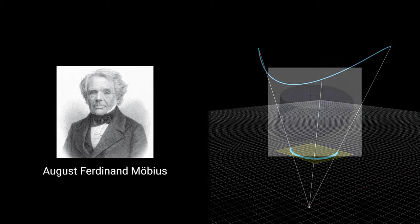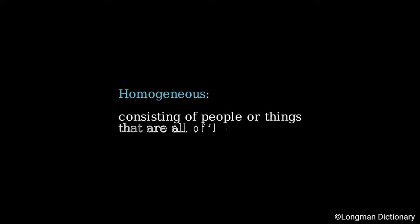Yes, he's the genius who is also famous for the Möbius band. According to Longman Dictionary, homogeneous refers as consisting of people or things that are of the same type. Well, what is the same in homogeneous coordinates?